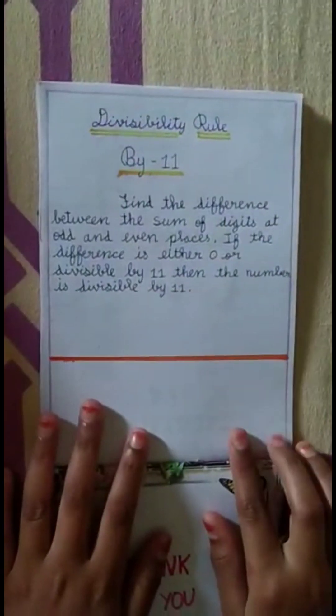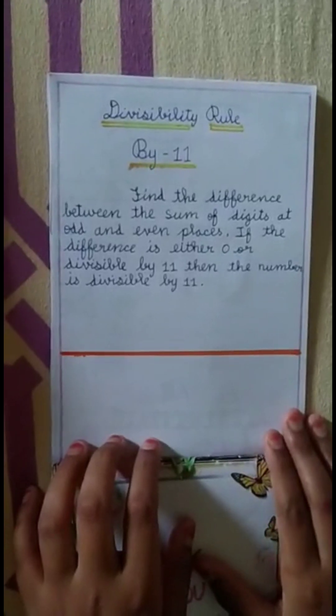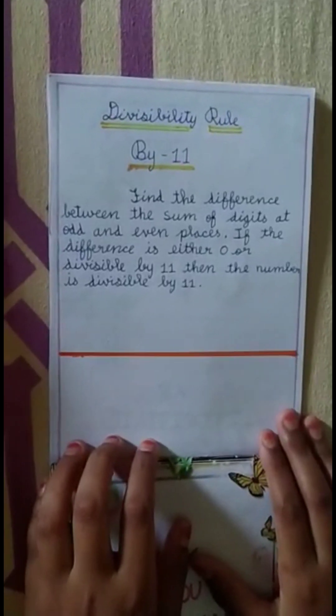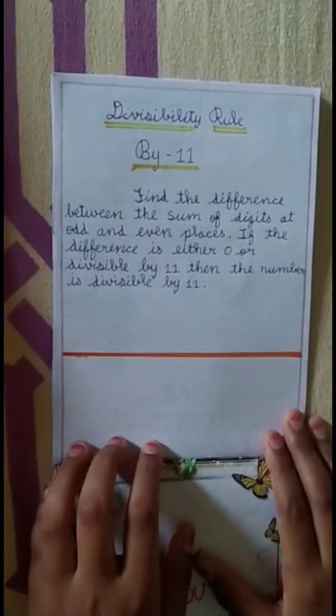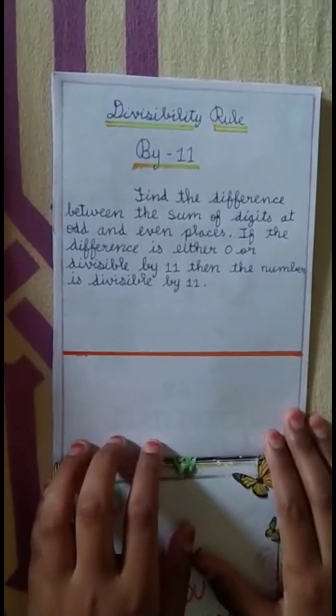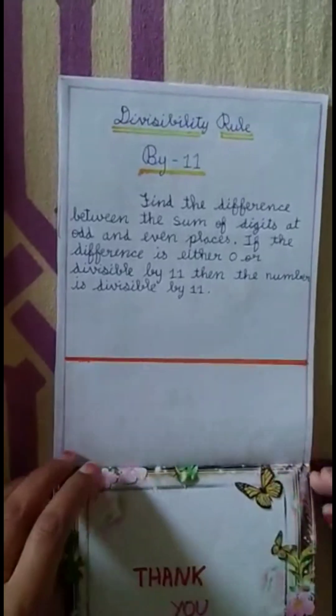Divisibility by 11: find the difference between the sum of the digits at odd and even places. If the difference is either 0 or divisible by 11, then the number is divisible by 11.